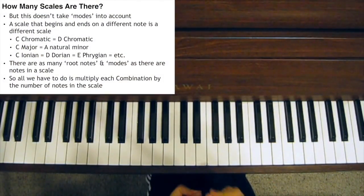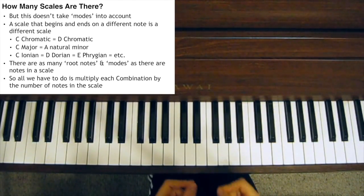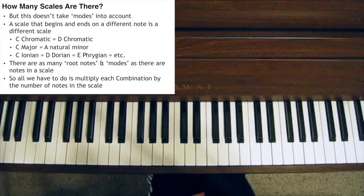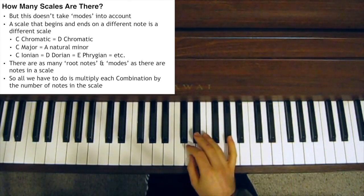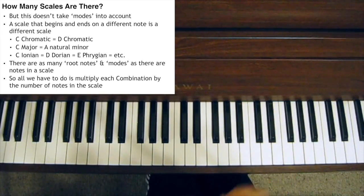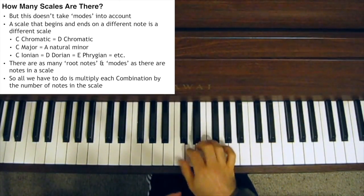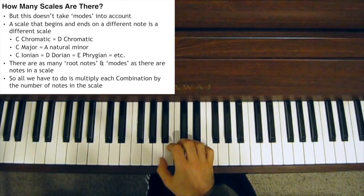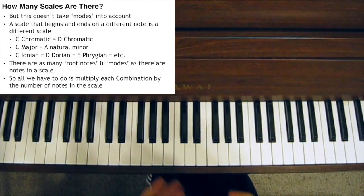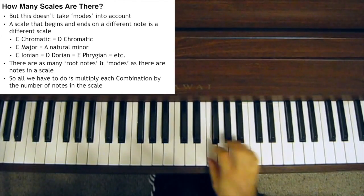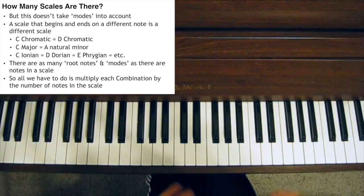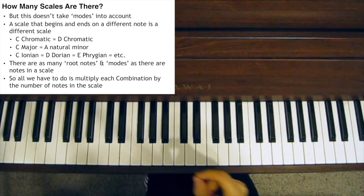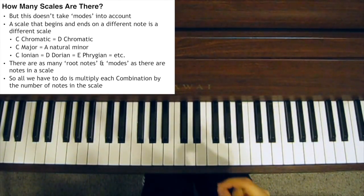But, as I said before, this doesn't take into account the fact that if you play the same notes from a different root note, then you have a new scale. For example, the C chromatic scale has all the exact same notes as the D chromatic scale. Or C major has the exact same notes as A natural minor. Or if you think in modes, C Ionian has the same notes as D Dorian, which has the same notes as E Phrygian, and so on. So there can be as many possible root notes as there are notes in the scale.